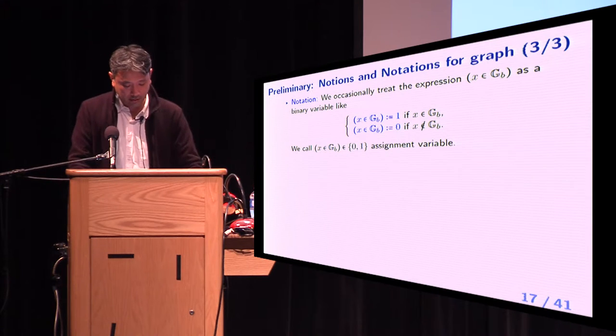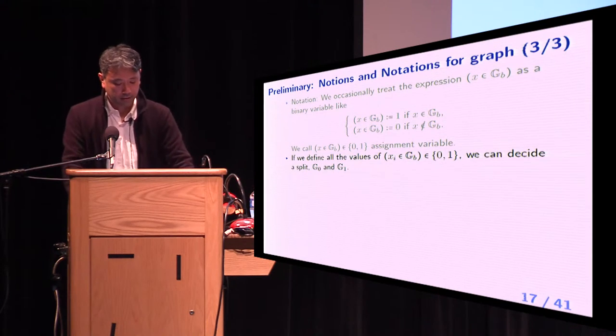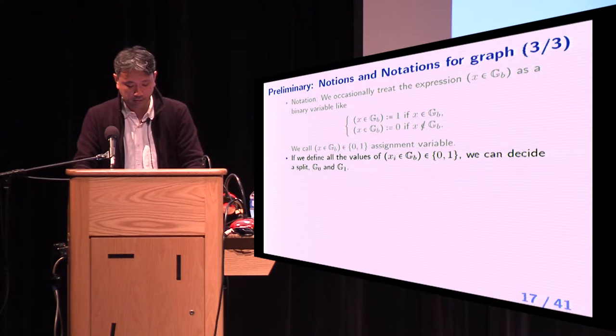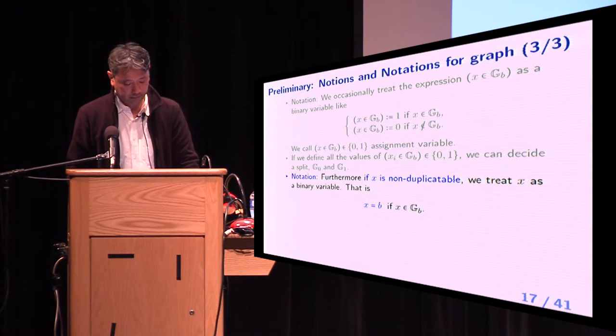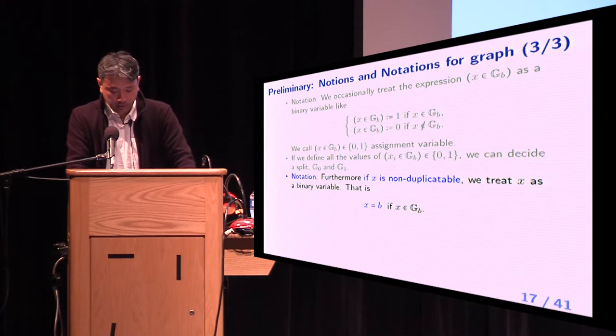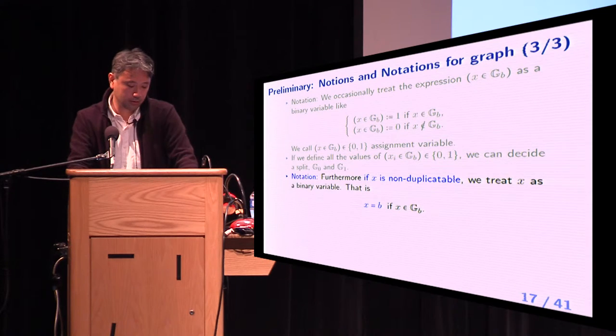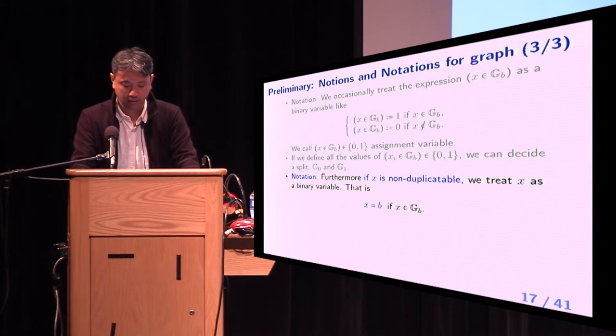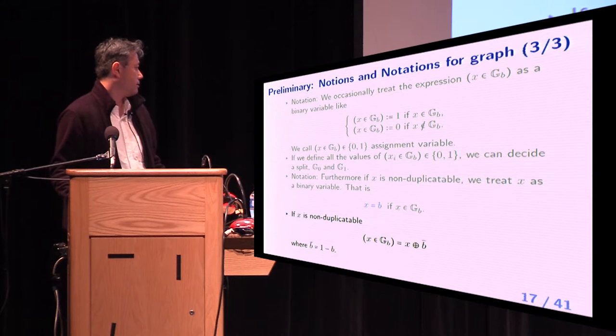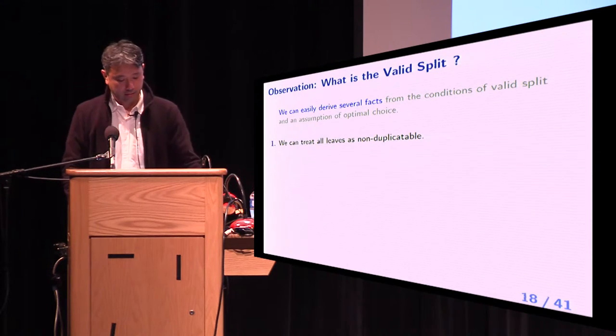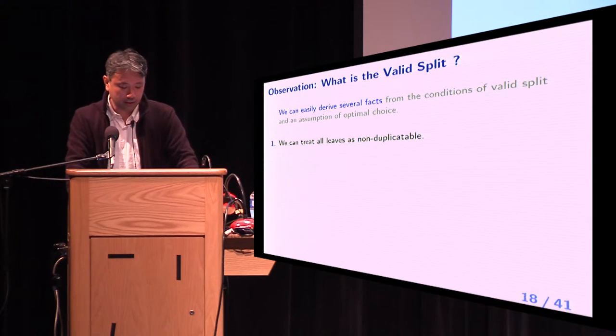And we define duplicatable node as the node which can be duplicated and non-duplicatable node as the node which cannot be duplicated. If X is non-duplicatable, X belongs to G0 or G1 exclusively. It is known that output of hash function becomes non-duplicatable and we can treat leaf node as non-duplicatable. And we occasionally treat the expression X in G_B as a binary variable. We call X in G_B assignment variable. If we define all the values of assignment variables, we can decide to split G0 and G1. Furthermore, if X is non-duplicatable, we treat X as a binary variable that is X equals B if X belongs to B.